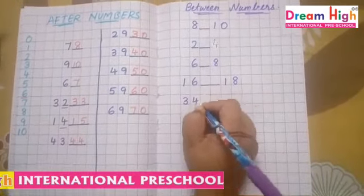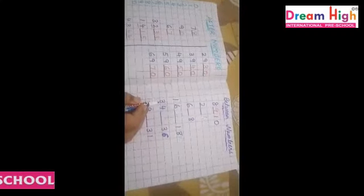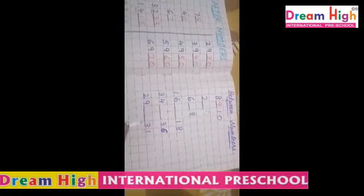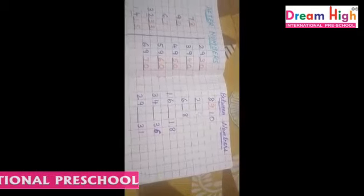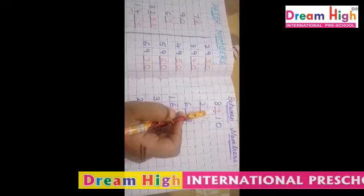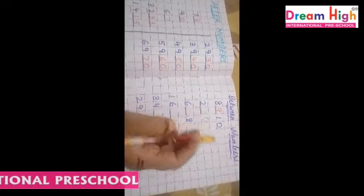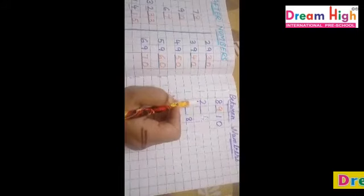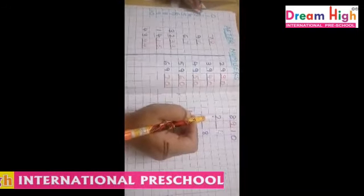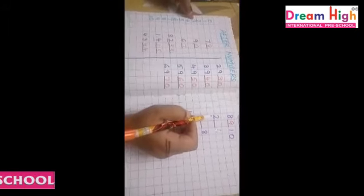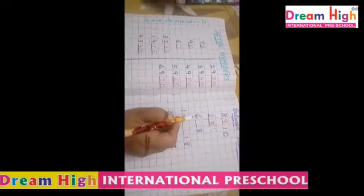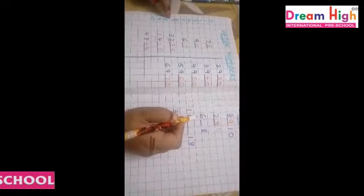Next is 34 dash 36, and 29 dash 31. Now, after 8 is 9 — so 8, 9, 10. What is the next number? Look here — 2. What comes after 2? 3. Then we will write 3. What is this? 6. What comes after 6? 7.